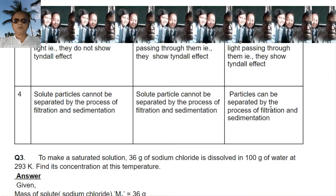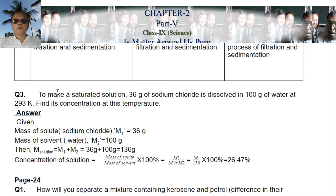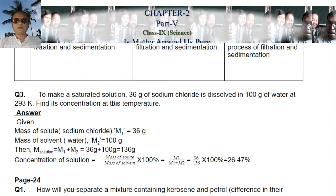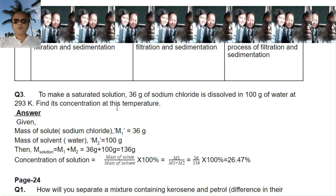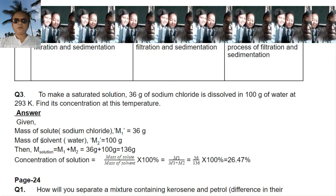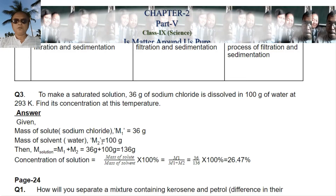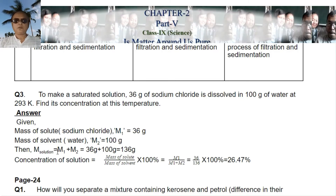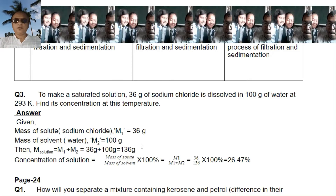Question number three: 36 grams of sodium chloride is dissolved in 100 grams of water at 293 Kelvin. Find the concentration of the solution at this temperature. Given: mass of solute (NaCl), M1 = 36 grams; mass of solvent (water), M2 = 100 grams. Mass of solution = M1 + M2 = 36 + 100 = 136 grams.